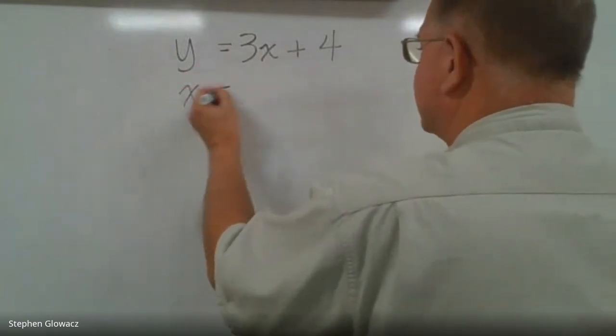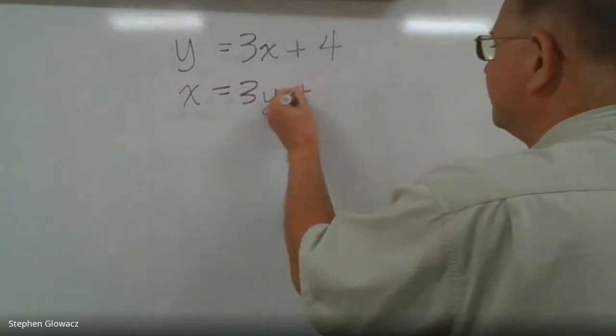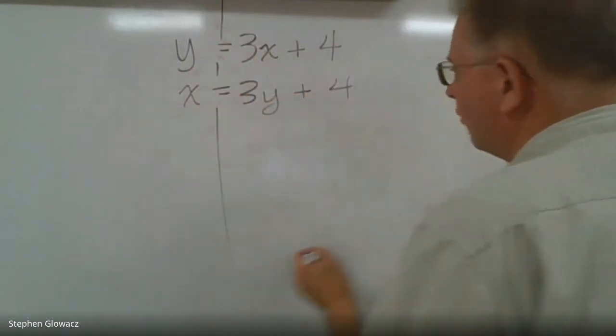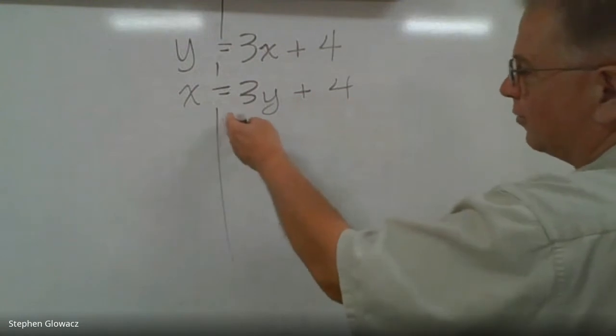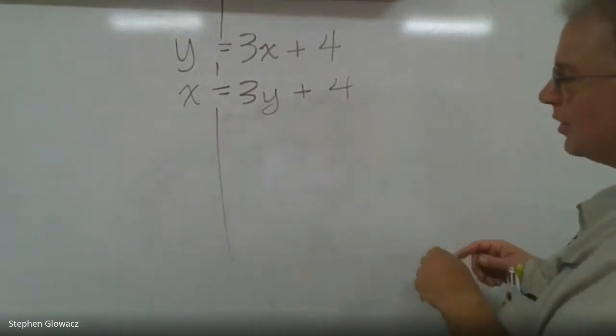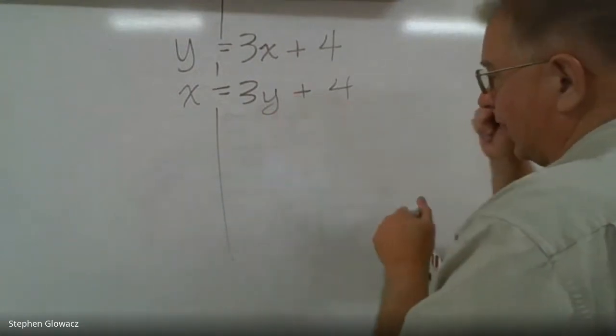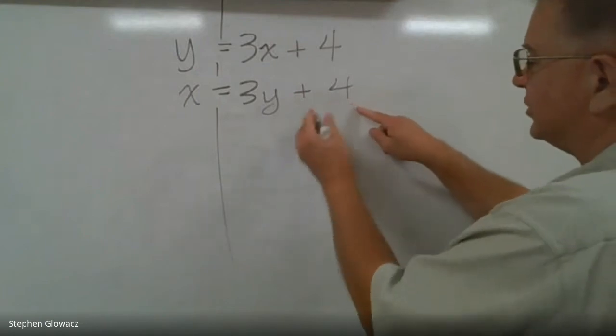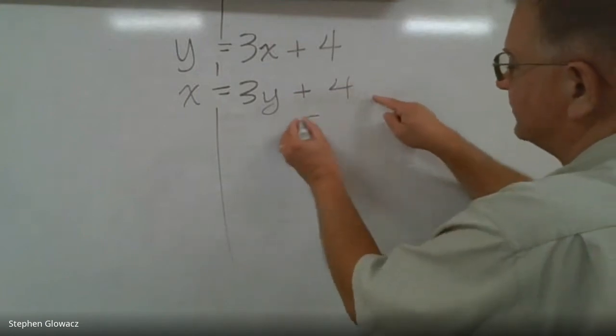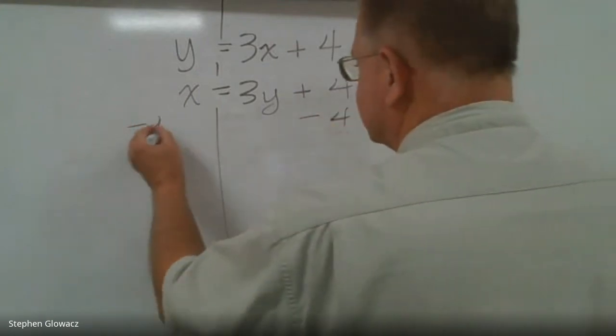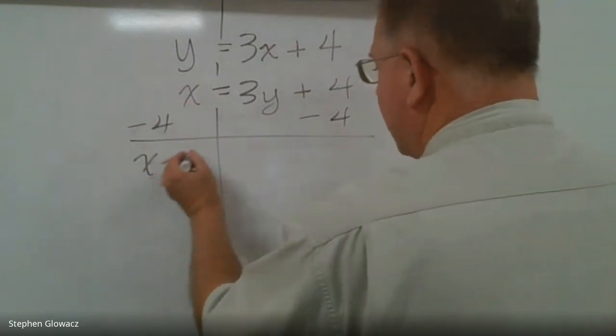So we have x = 3y + 4. Now we're going to solve for y. We're going to focus on this side of the equation. Remember, we always deal with our addition and subtraction first, so we have a +4, so we're going to subtract 4 from both sides and we have x - 4 = 3y because these 4s cancel out.